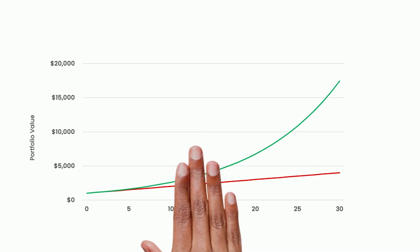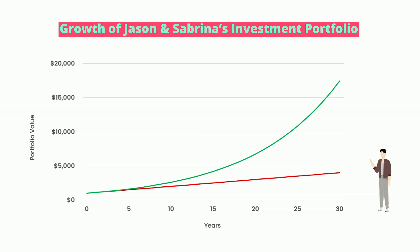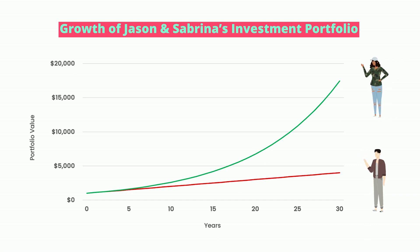I know you're probably thinking — so what, Maya? That's not a big deal. Why have you wasted my time for $31? Stay with me. With compound interest, the long term is where you really see the difference — and I mean a big difference. Here is a chart I prepared earlier which shows the growth of Jason and Sabrina's investments. The red line represents Jason and the green line represents Sabrina. The chart clearly shows how compound interest works wonders for Sabrina over time.